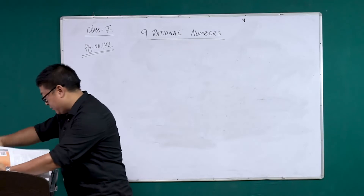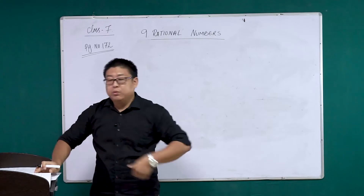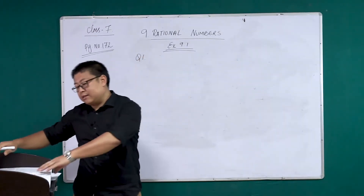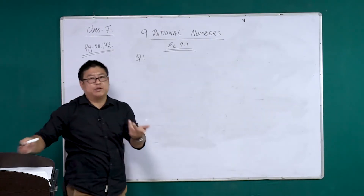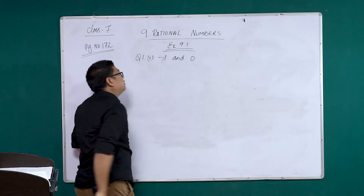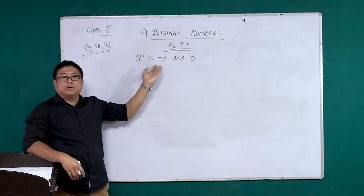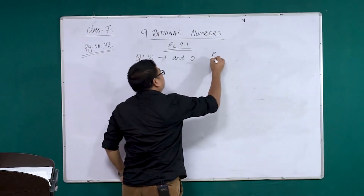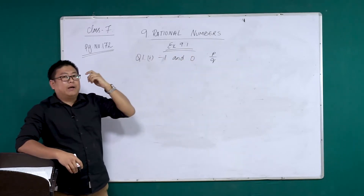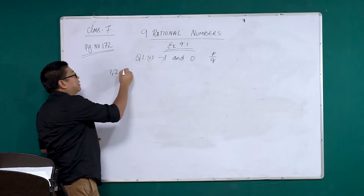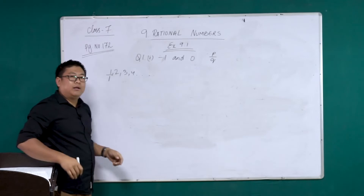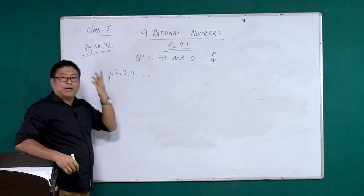Please turn to page number 182, Exercise 9.1. Question number 1: list 5 rational numbers between minus 1 and 0. Now you may wonder how minus 1 and 0 are rational numbers in the form P by Q. I want you to know that for every counting number — 1, 2, 3, 4, 5, 6, and so on — there is a denominator 1. I call it the invisible 1. It's invisible to the eye, but there is always a 1.